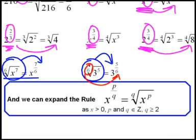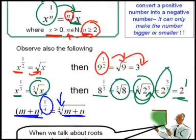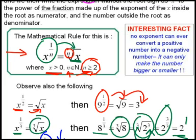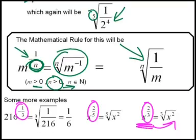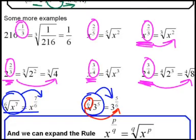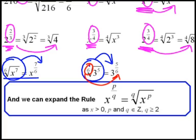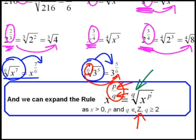We can now expand the general rule. First, a fraction in the exponent becomes a root. Then we extended it to cater for negative fractions in exponents as well. Now, using variables P and Q — where P is the numerator and Q is the denominator, and both can be any positive or negative integer (Z stands for all integers) — the rule becomes: x to the power of P over Q equals the Qth root of x to the power of P. Simply take Q, the denominator, outside the root sign, and leave P as the power of x inside.